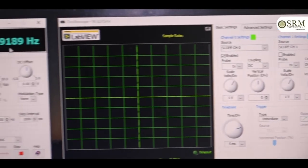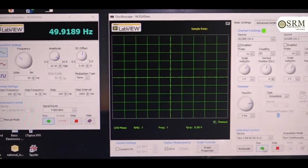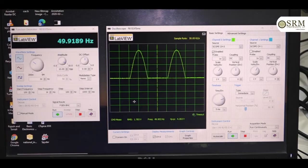Here, we are applying 50 Hz frequency 10 volts peak to peak voltage. Now, run this oscilloscope.